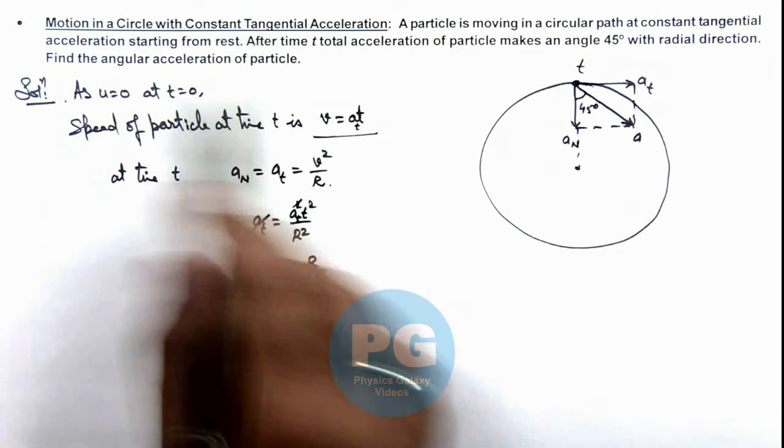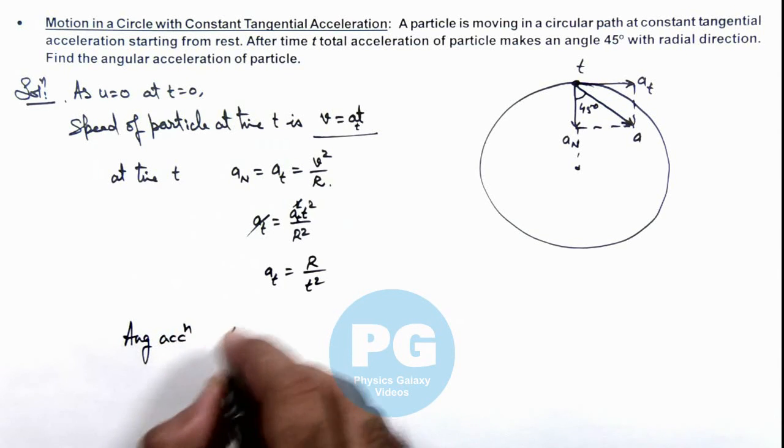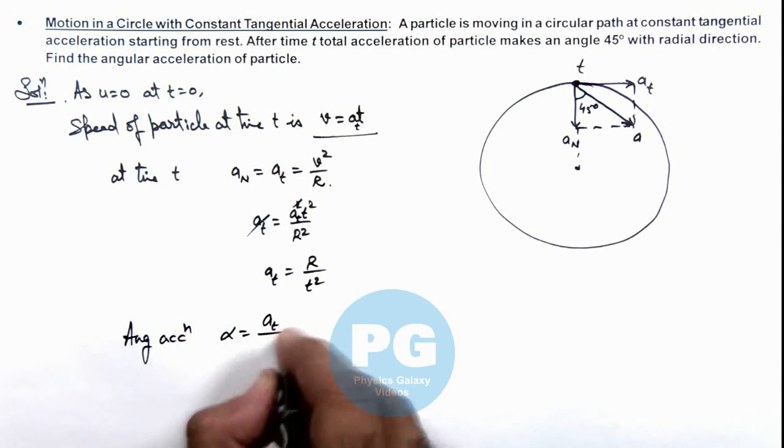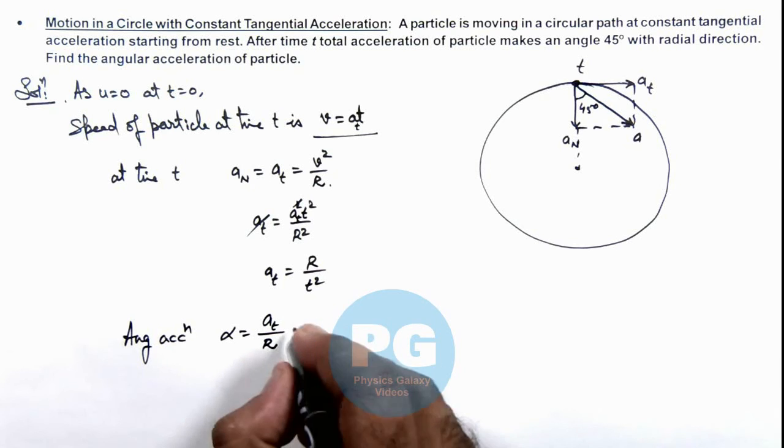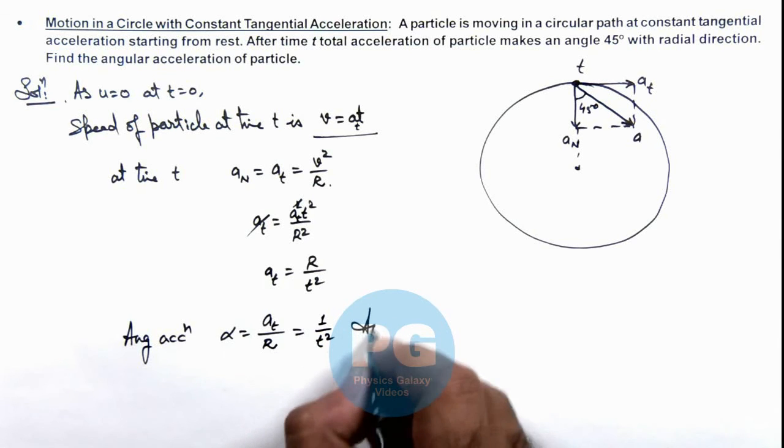As we are required to find the angular acceleration, angular acceleration can be written as tangential acceleration divided by r. Substituting the value of tangential acceleration, this gives us 1/t², which is the final result.